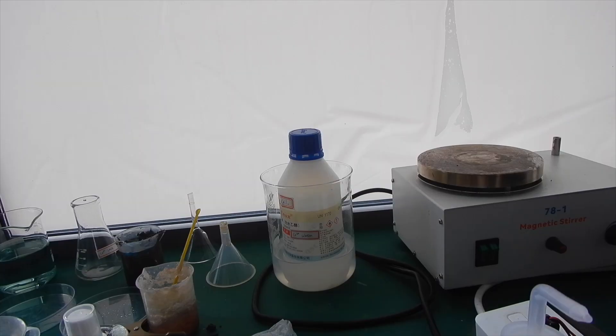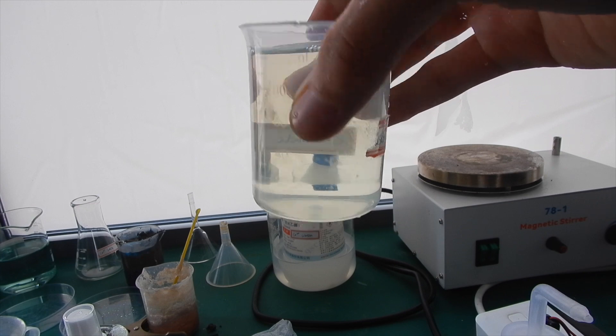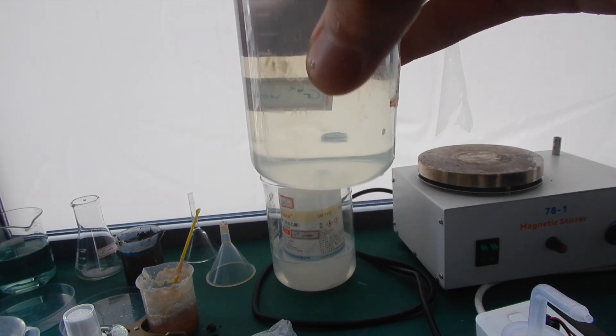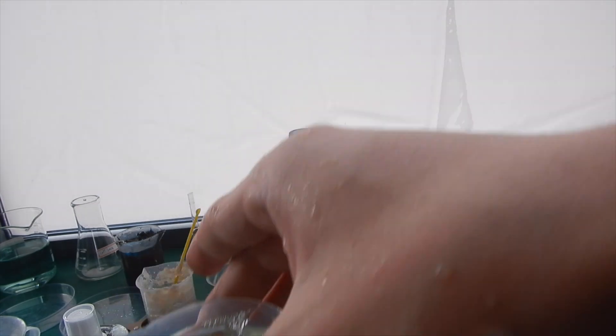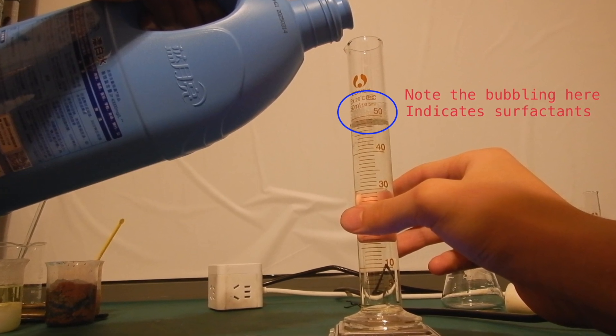When I came back, I poured everything out and sadly there are no signs of reaction. The color of the bleach was still there, and there was absolutely no signs of layer separation. Upon further look, the bleach contained some surfactant impurities, which probably explains why it didn't work.